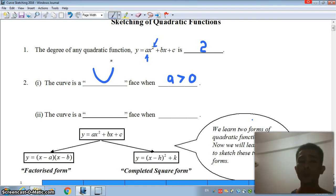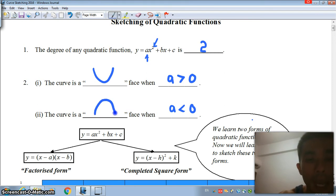The converse is true as well. If a is negative, in this case the square term is actually negative, we will have a frowning face, otherwise known as an n-shape. This is what you have done previously.